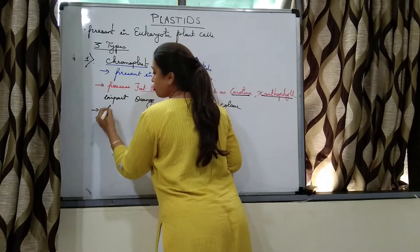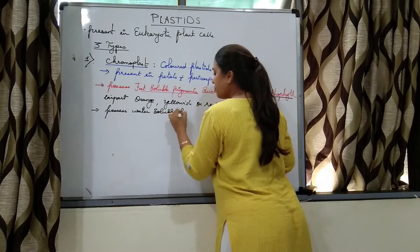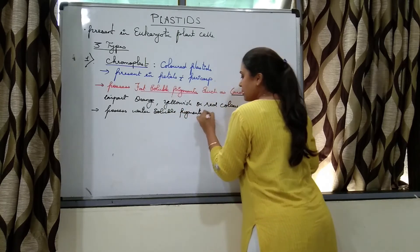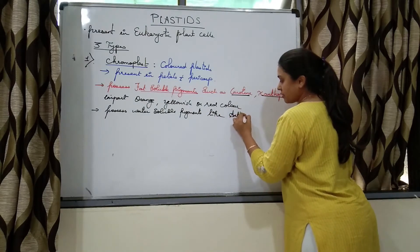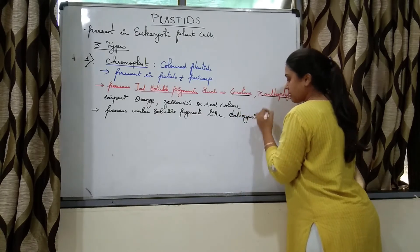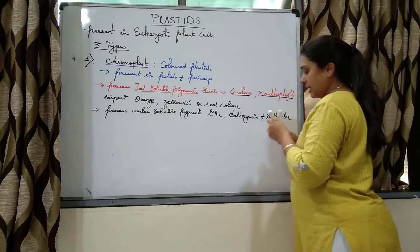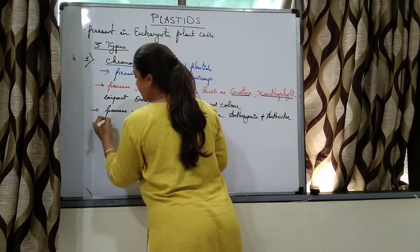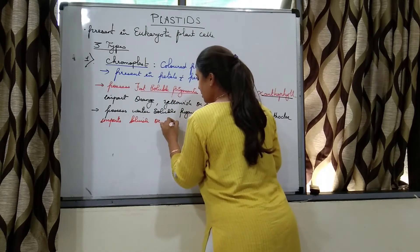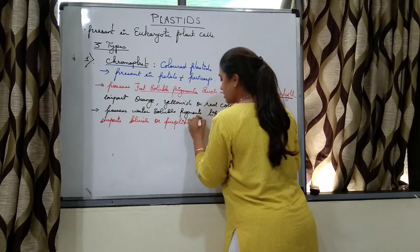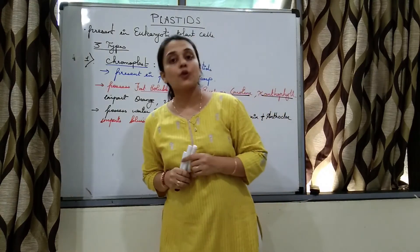Chromoplast also possesses water-soluble pigments like anthocyanin and anthochlore, which impart bluish or purplish color.